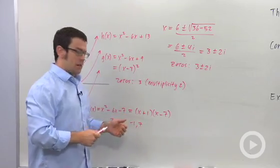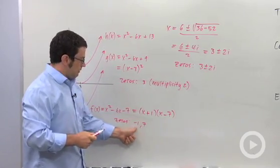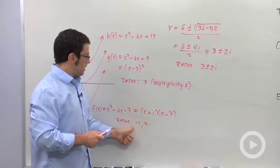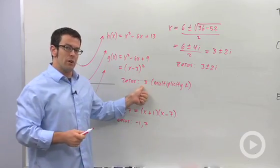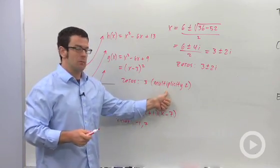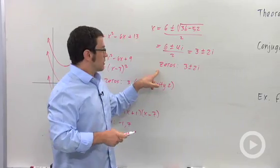So when you look at the results here, you see that the function f had two real zeros. This one has two real zeros if you count multiplicity, and this one has two imaginary zeros.